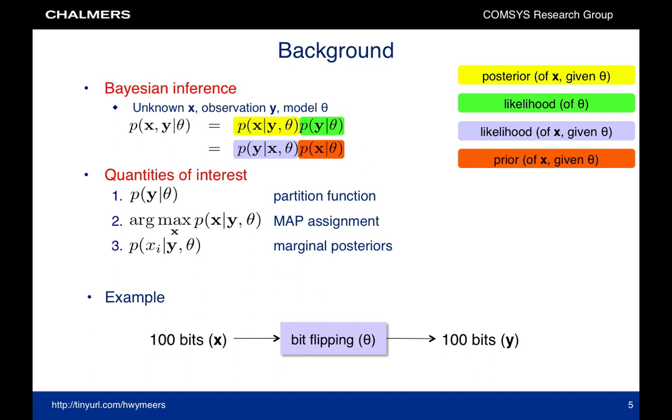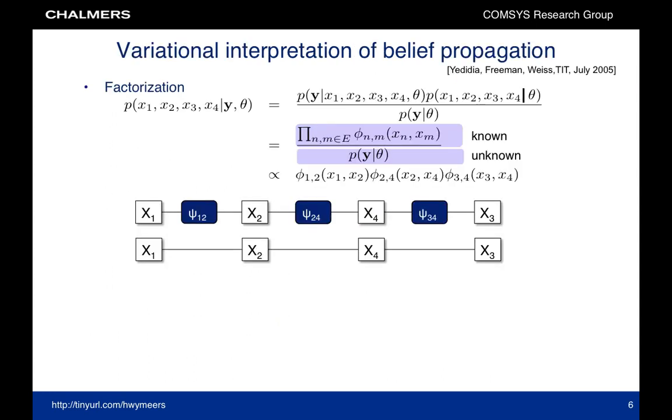In the bottom of the slide you see a simple example, where x is a sequence of bits, theta is a channel parameter indicating with which probability bits are flipped, and y is the channel observation. Here we will focus on the first and third problem, the partition function and the marginal posterior distributions. In most cases of interest the posterior can be factorized, where the factors phi are known, but the denominator, the likelihood function or the partition function is unknown.